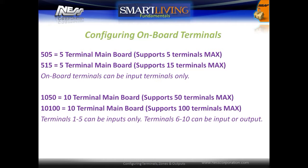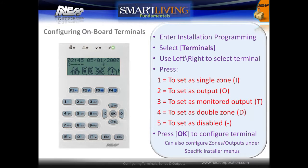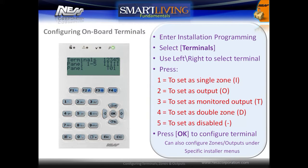To configure the onboard terminals, enter into installation programming and then select the Terminals menu. Use the left and right arrows to select a terminal, and use numbers 1 through 5 to set the terminal type. Once the terminal type has been set, press the OK button to configure the terminal. Terminals can also be configured under Zones or Outputs in installation programming.